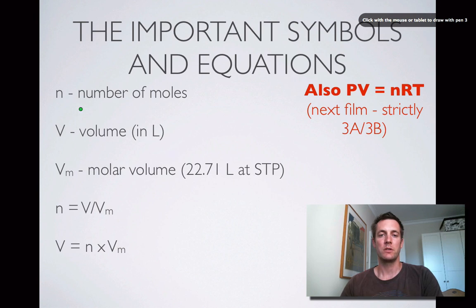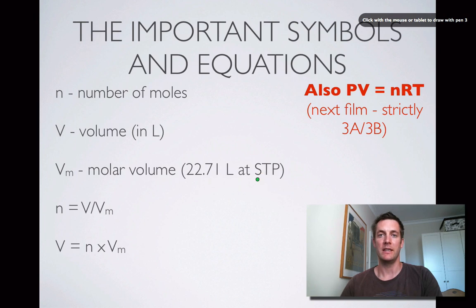Let's look at the symbols and equations we need. We have the number of moles, which is little n; the volume given in litres, which is capital V; and the molar volume, which is the volume of one mole of any gas — importantly, any gas — which is Vm. 22.71 litres is how much one mole of any gas will occupy at STP.